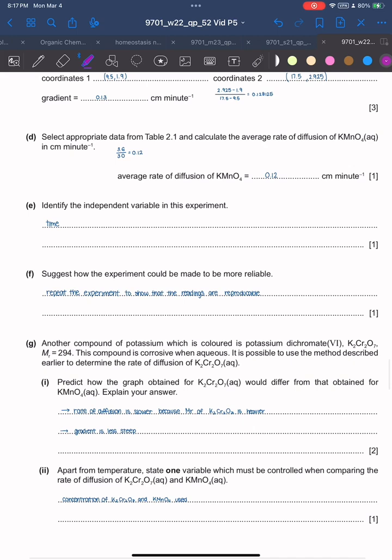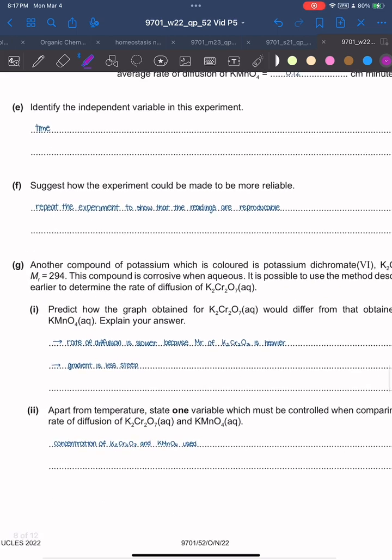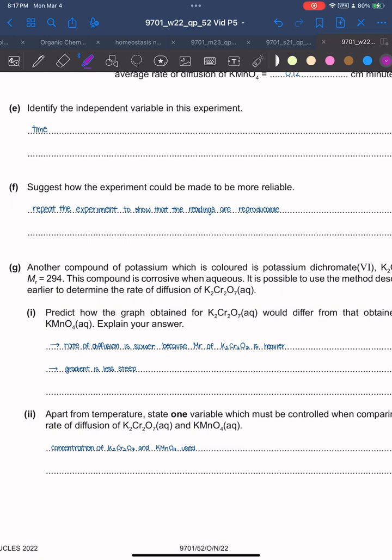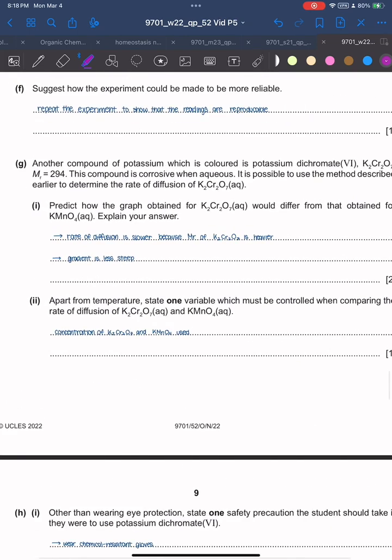Suggest how the experiment could be made more reliable. You just have to repeat the experiment to show that the readings are reproducible, meaning that when you repeat the experiment the readings are basically the same.